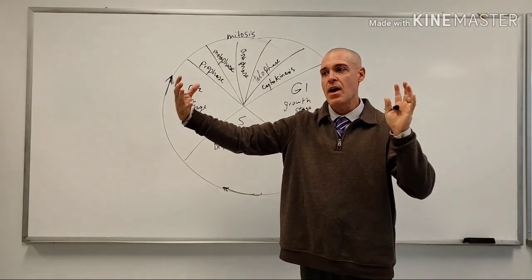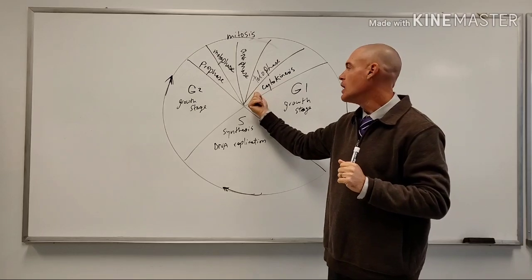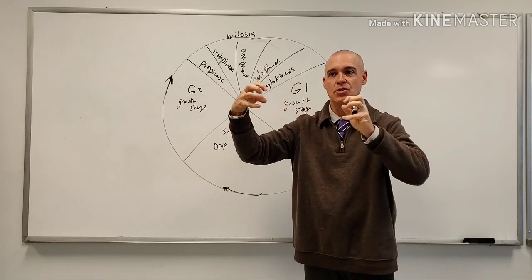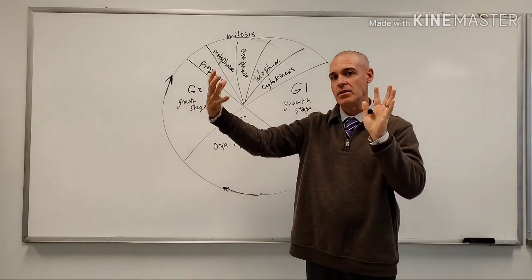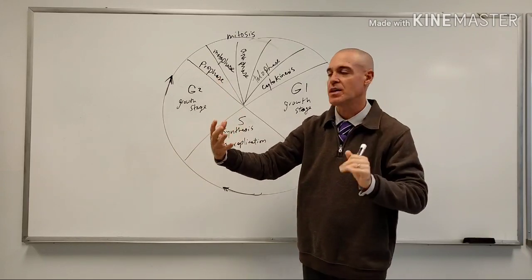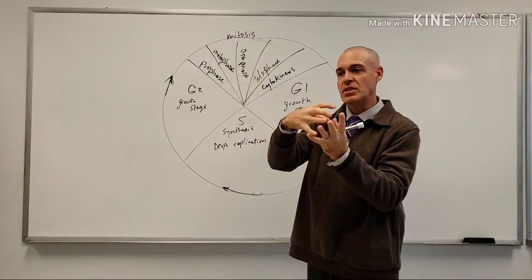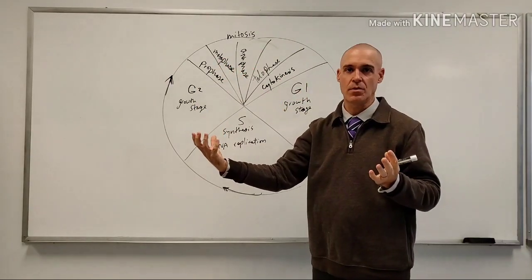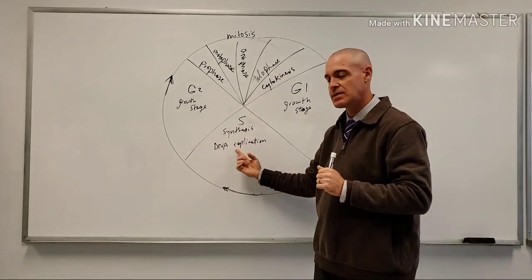And what's going to happen in the very last step, cytokinesis, is the splitting of the cytoplasm, where basically the cells are going to split into two. So then what do we wind up with? We wind up with basically two identical cells. And again, that is what mitosis is—it's one cell basically dividing into an exact copy of itself. And the DNA has to be the same, it has to be copied exactly the same.